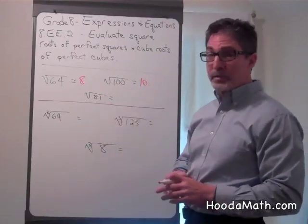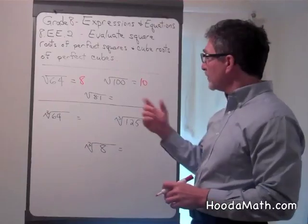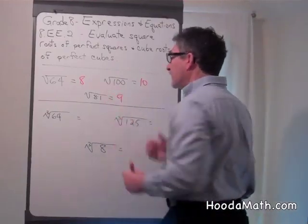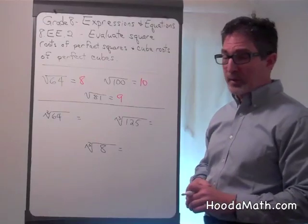And what number times itself gives you 81? 9, because 9 squared equals 81.